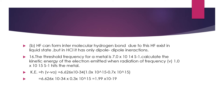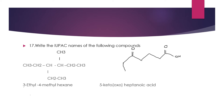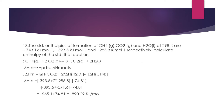Question 17: Write the IUPAC names of the given compounds. The first one is 3,4-dimethylhexane and the second one is either 5-ketoheptanoic acid or 5-oxoheptanoic acid.